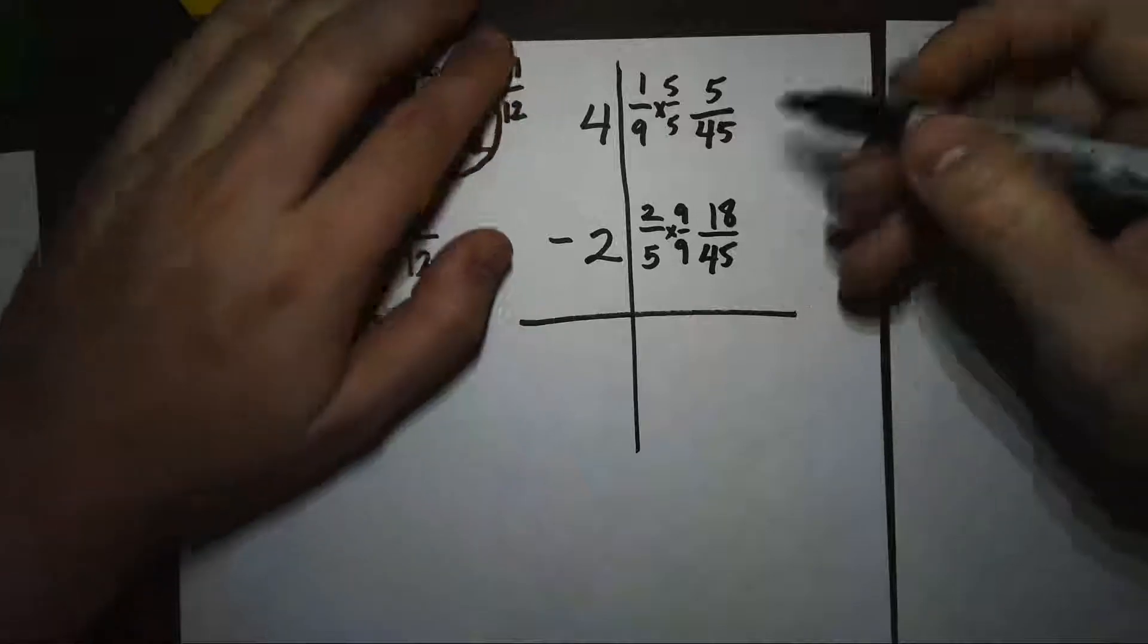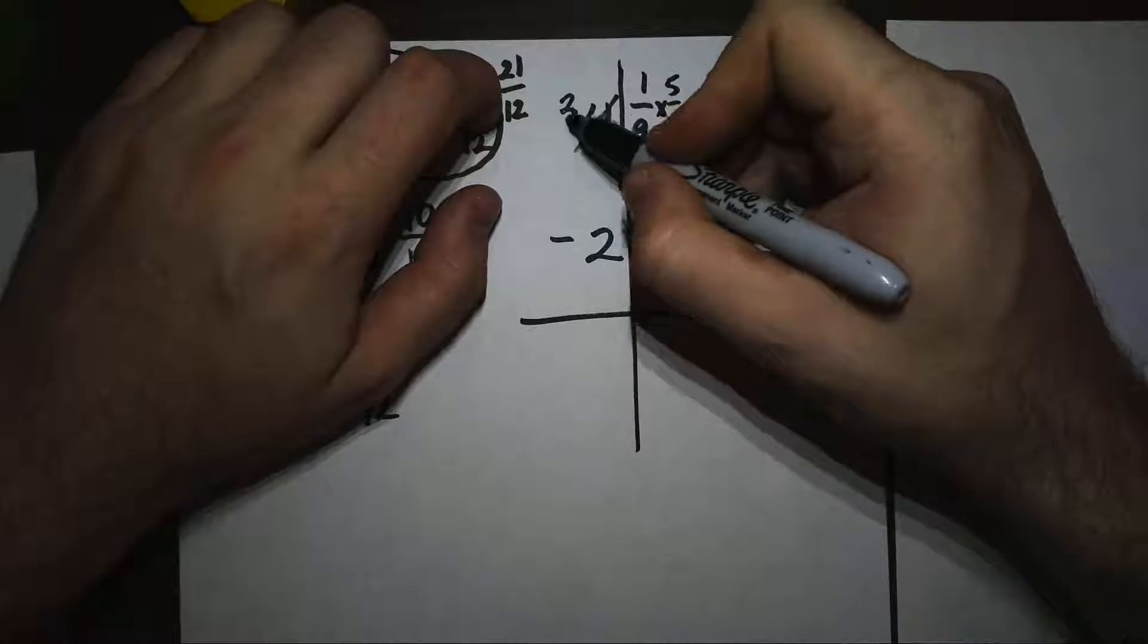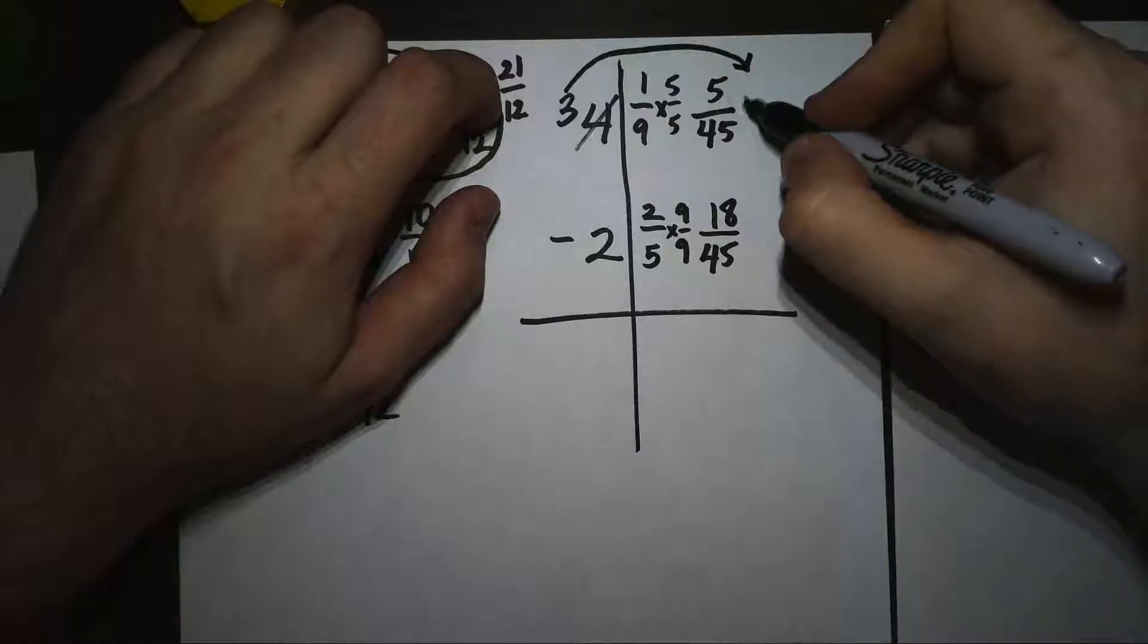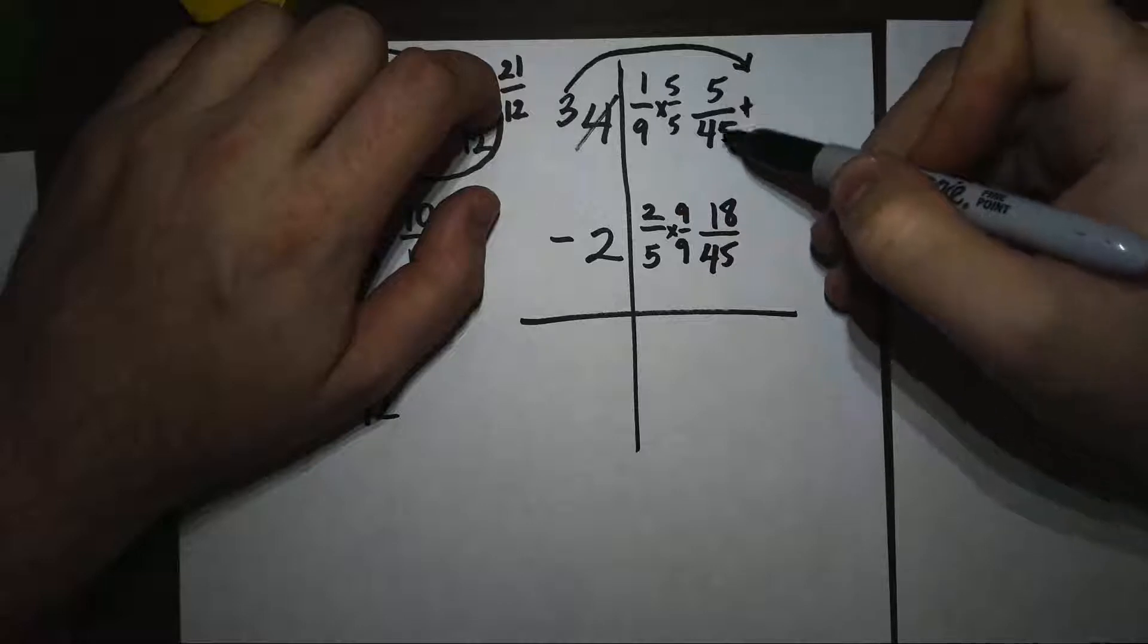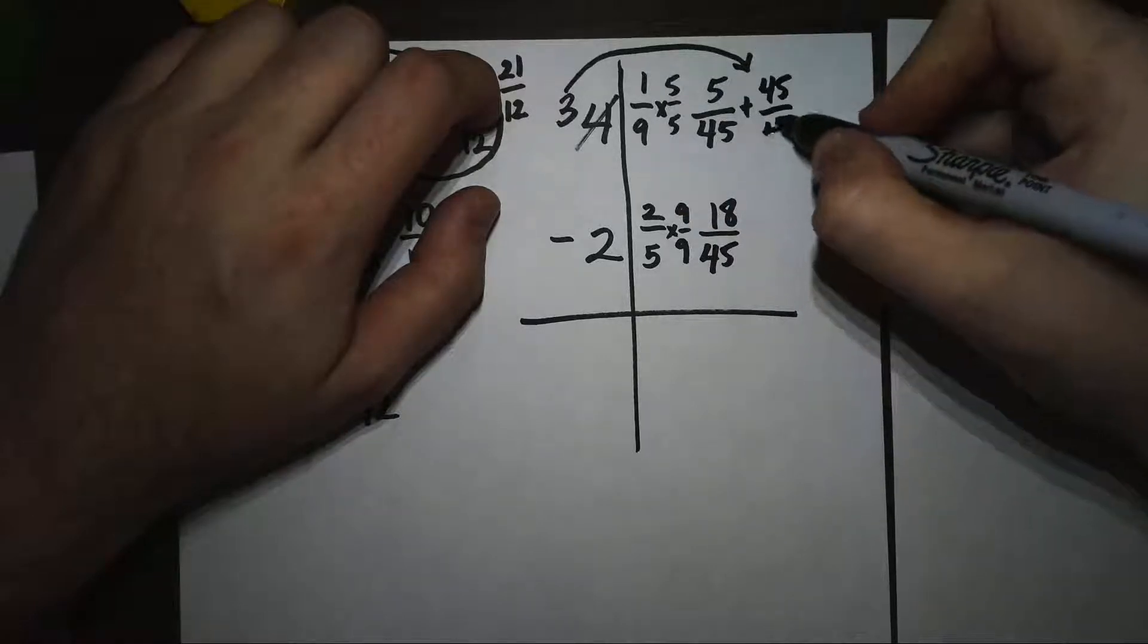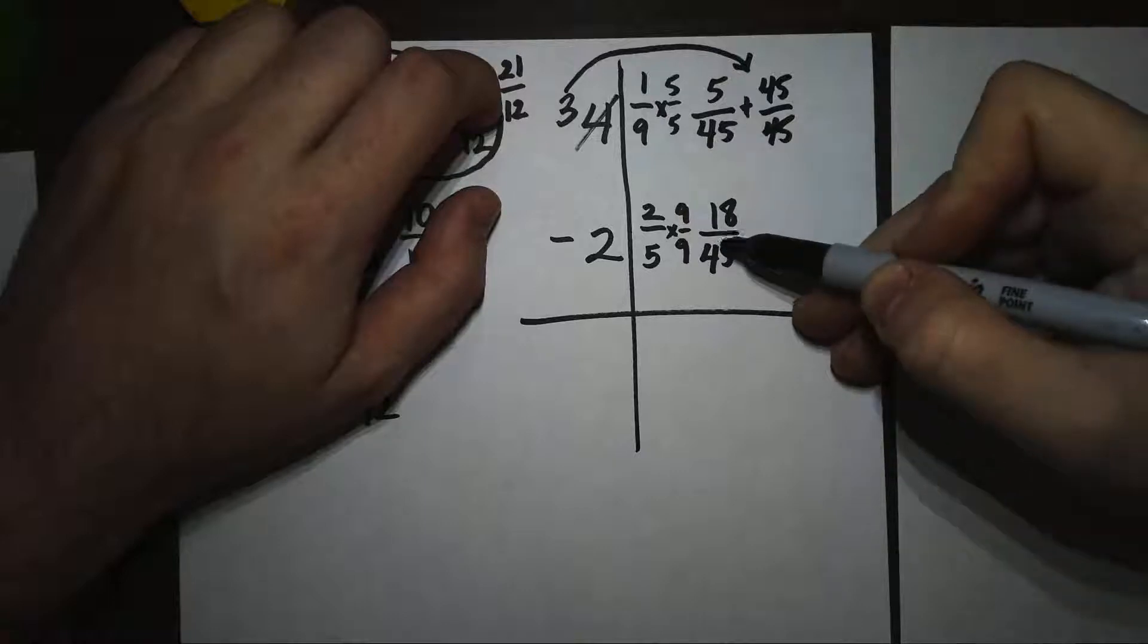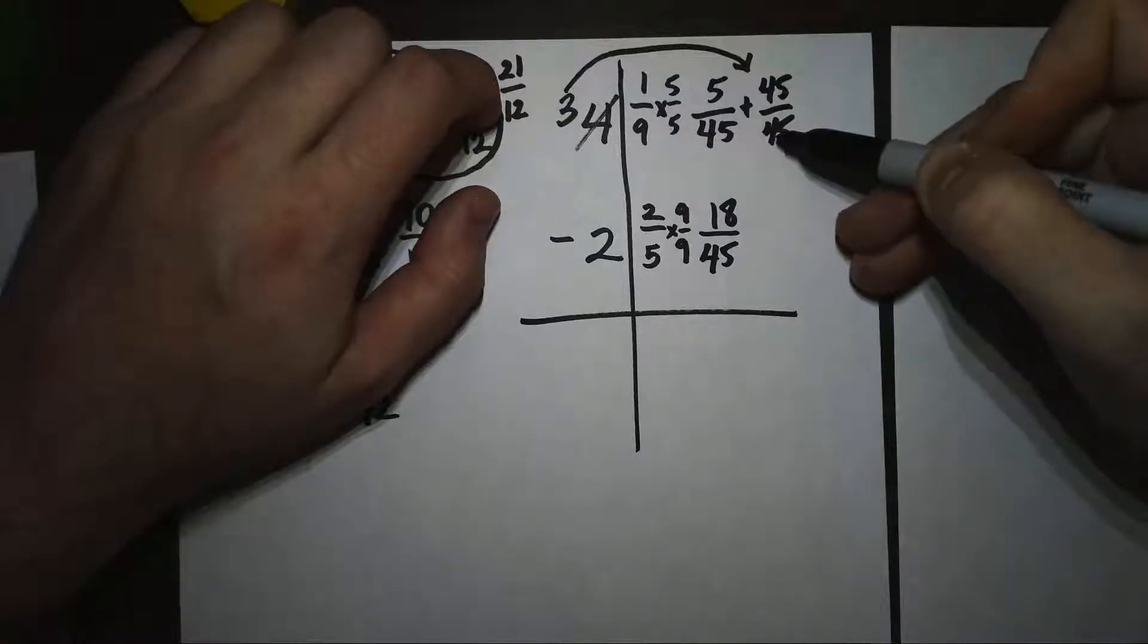So I'm going to have to come over to my whole number, my 4 right here, and regroup. I'm going to take 1 away and put that 1 whole back right over here. I'm going to add it back. So all I did was move that whole right over to the fraction column. Now over here, I have 5/45 plus 45/45. And the reason this is 45/45 is that whole that I moved over is going to take the name of the fractions. And because it's 1 whole, it's going to be the whole thing, 45 out of 45.